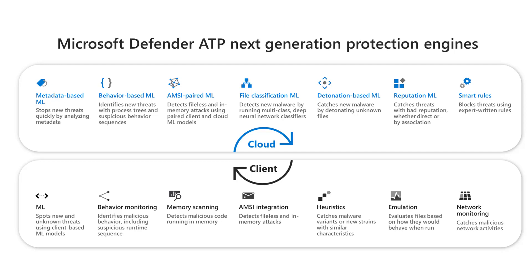The AMC paired ML engine pairs client-side and cloud-side machine learning models to perform advanced analysis of scripting behavior, both pre- and post-execution, to catch advanced threats like fileless and in-memory attacks. These models include a pair of models for each scripting engine covered, such as PowerShell, JavaScript, VBScript, and VBA macros in Office.